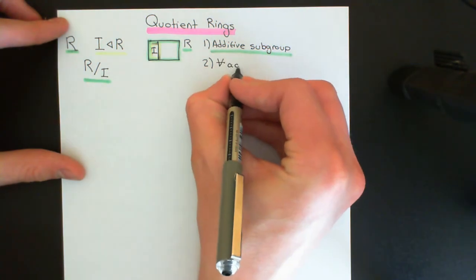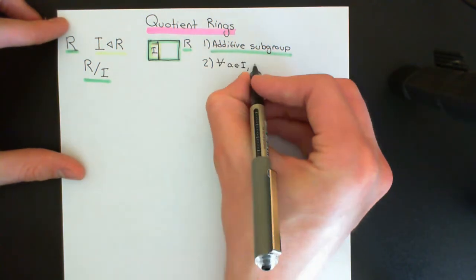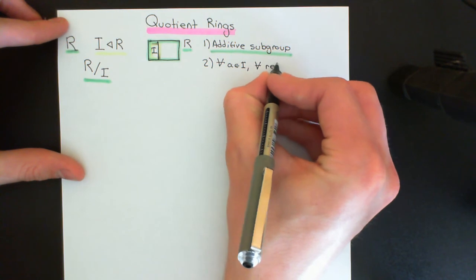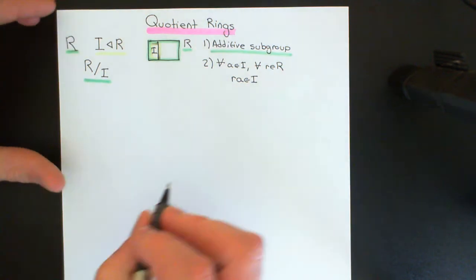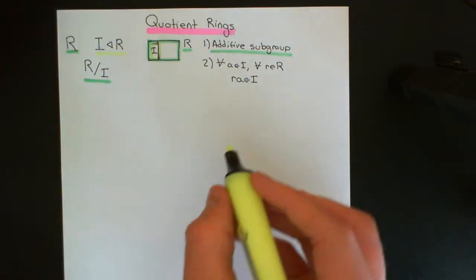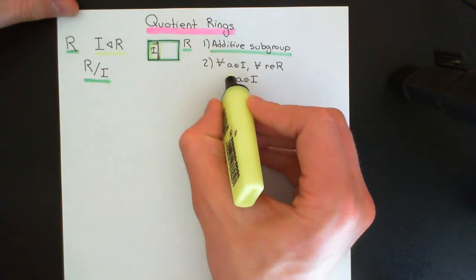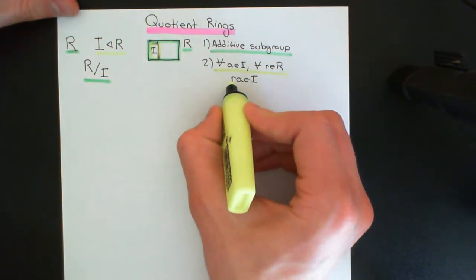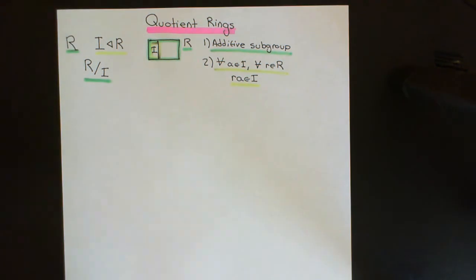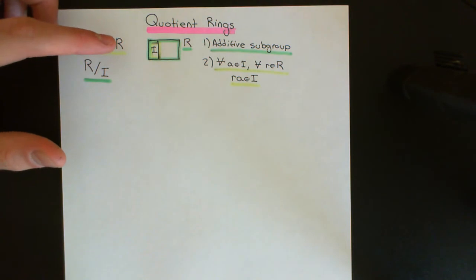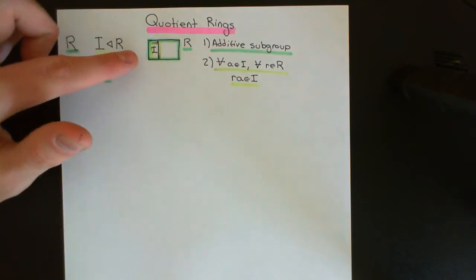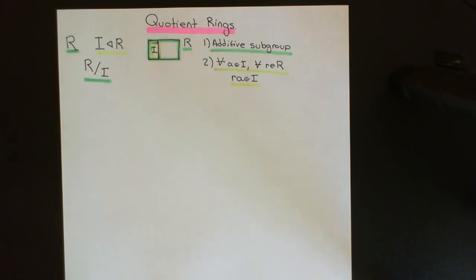Property number two is that the ideal is also closed under multiplication by other elements of the ring. For all little a that you can pick from the ideal I, and for all little r from the ring, it must be the case that r times a is also an element of the ideal. Since we're working with a commutative ring, r times a is the same as a times r, so we only need one condition. Take any element from the ideal, multiply it by whatever element you like from the larger ring, and you must end up with something back in the ideal.